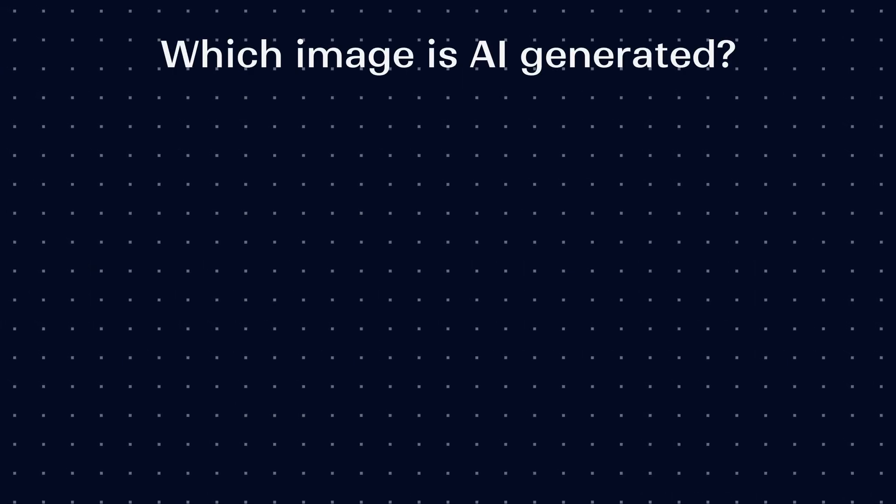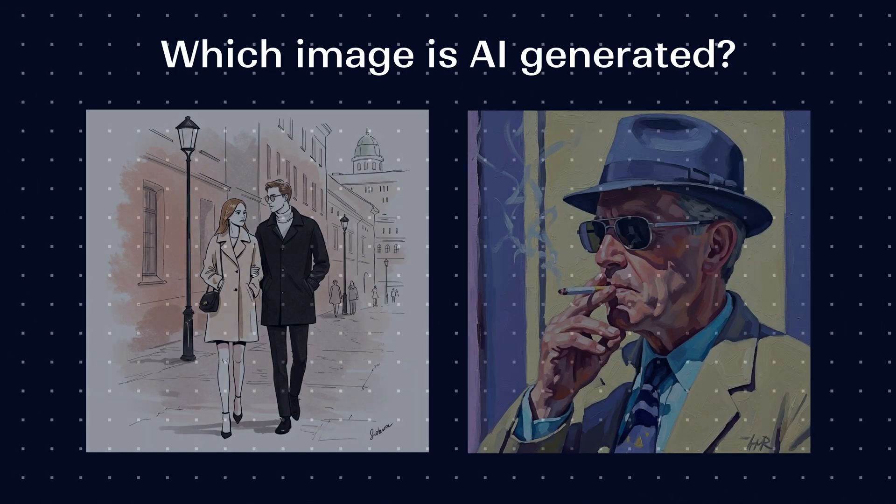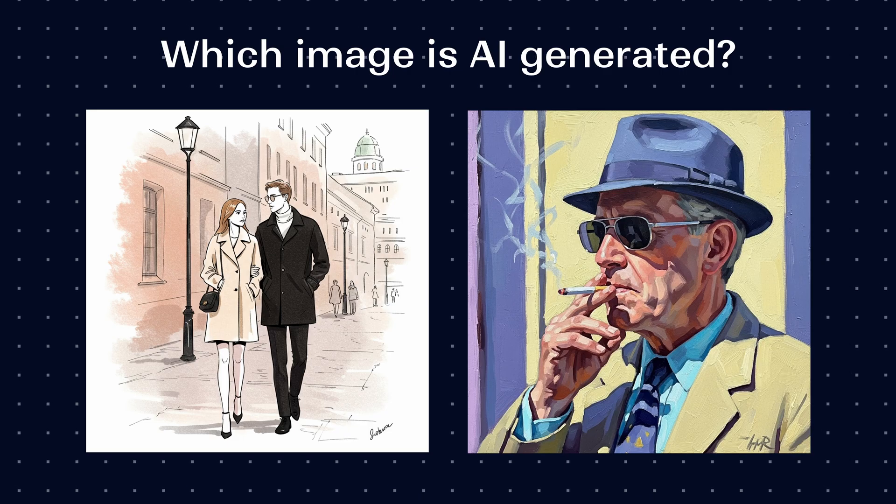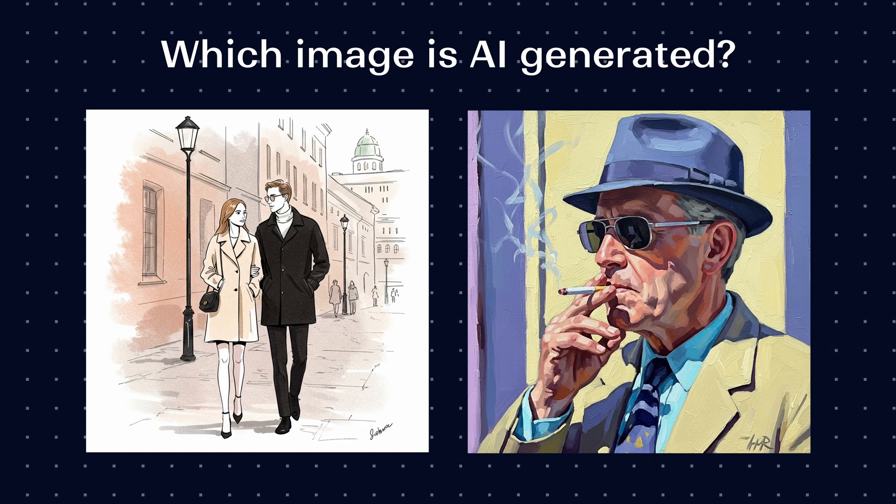Let's try another experiment. I'll show you two images and you have to tell me which one is AI generated. If you chose the left one, you'd be correct — that is AI generated. But if you picked the right image, you'd also be correct. Because unfortunately, both of these are AI generated.